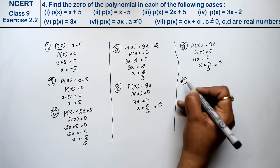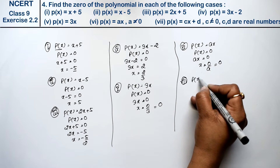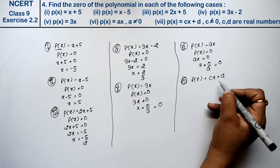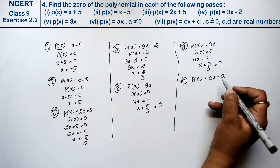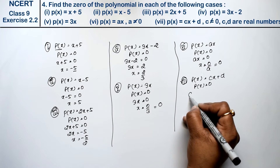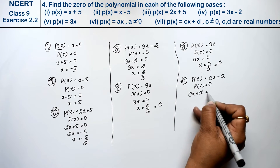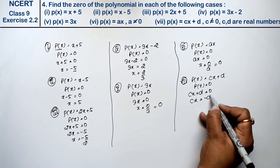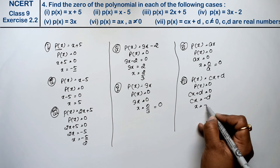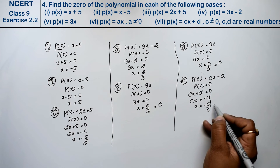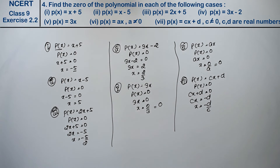Let's do seventh part. p(x) equals to cx plus d, where c is not equal to 0 and c and d are real numbers. तो हमने p(x) की value 0 रखी, तो cx plus d equals to 0. cx क्या हो गया? d उधर गया, minus का हो गया. x equals to minus d — यह c multiplier में था x के साथ, और यहां यह नीचे आगे. Minus d upon c is the answer.